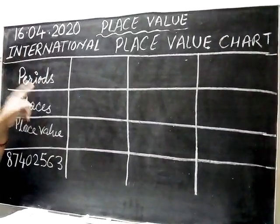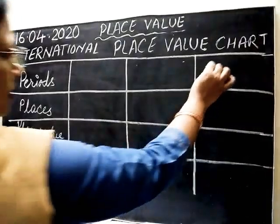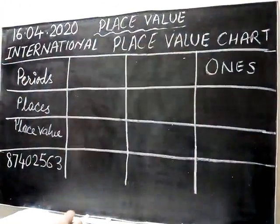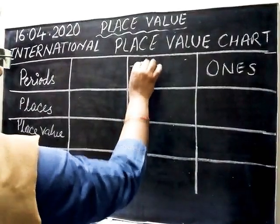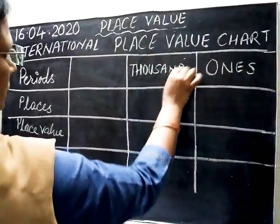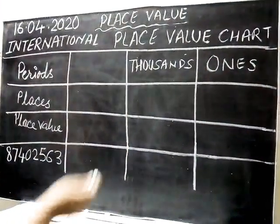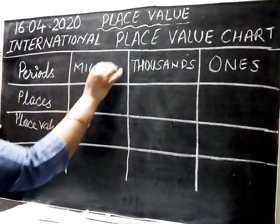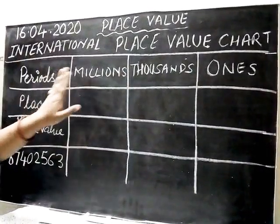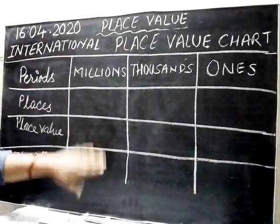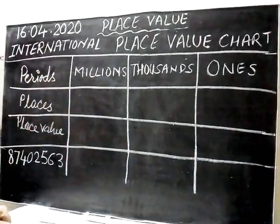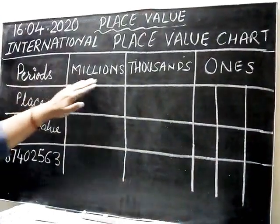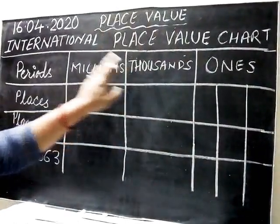Now which are the periods? Let's see. We will proceed from the right side. The ones period is the same as in the Indian place value chart, then thousands — also same as the Indian place value chart — but here there is no lakh, no crore. The third column is millions. So the three periods are: ones period, thousands period, and millions period.